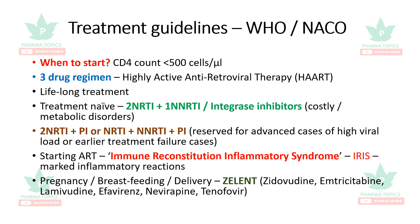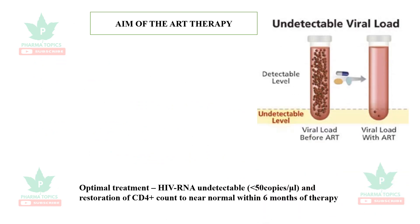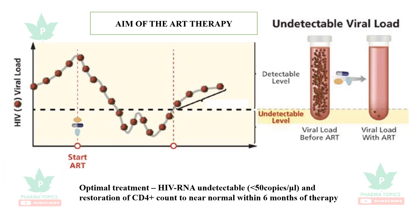The aim of ART therapy is optimal treatment: HIV RNA should become undetectable — less than 50 copies per microliter — from an initial number of around 100,000 copies, within six months. Additionally, the CD4 count should be restored to near-normal levels within six months of therapy.